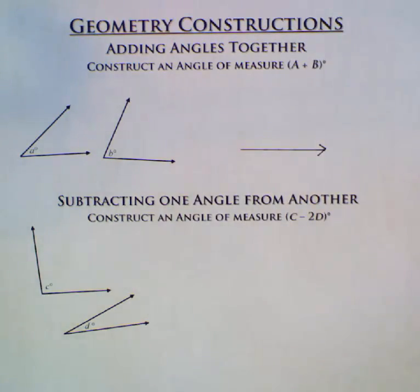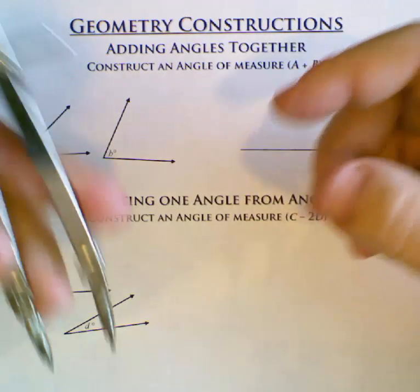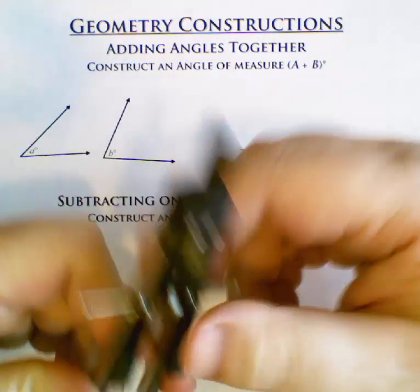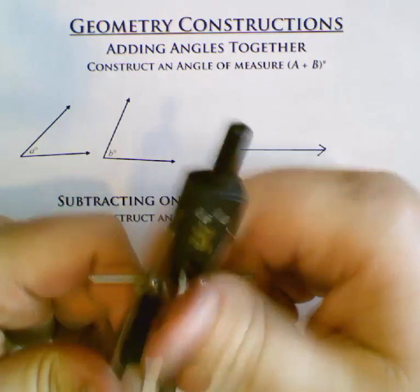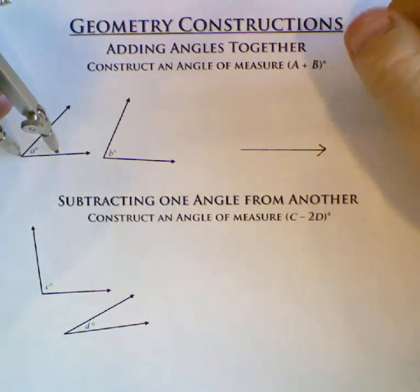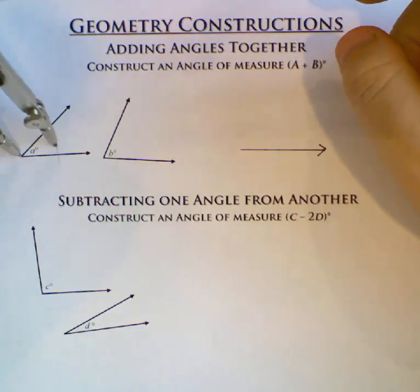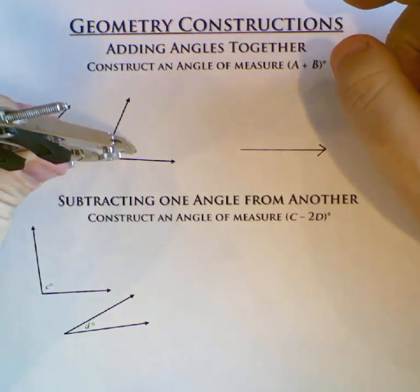Now we're going to do kind of what we did with the copy angle construction. You're going to take your compass and set it to some size which is convenient for you. Some size which is not too big, not too small. And come over here.